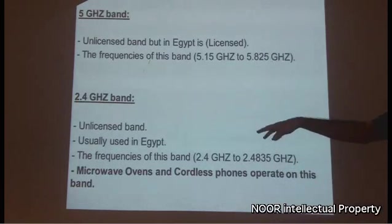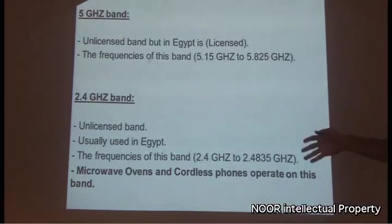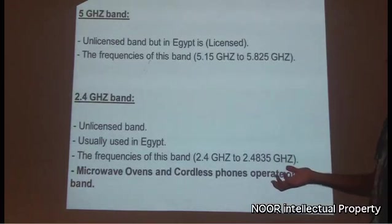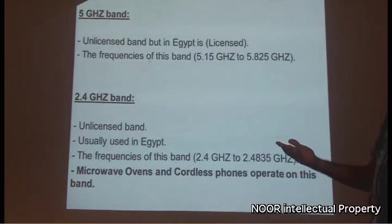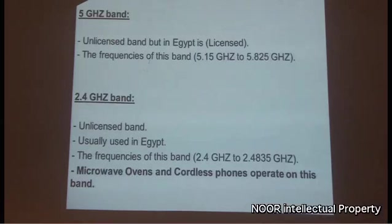It is important to note that microwave ovens and cordless phones also operate in the 2.4 GHz band. If these devices are present in your home or workplace, you should position your Wi-Fi access point or device far away from them to avoid interference with the Wi-Fi signal.